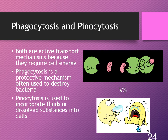We're going to finish up active transport with phagocytosis and pinocytosis. Phagocytosis literally means cell eating, and pinocytosis means cell drinking. Phagocytosis enables cells to engulf large particles like bacteria — this is what white blood cells do as part of our immune system. Once the particle is taken into the cell, it can fuse with a lysosome where it is broken down by enzymes. Pinocytosis allows the cell to incorporate fluids or dissolved substances into the cell. Both phagocytosis and pinocytosis require ATP, so they are active transport mechanisms.